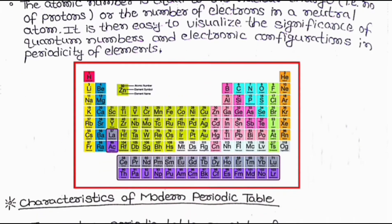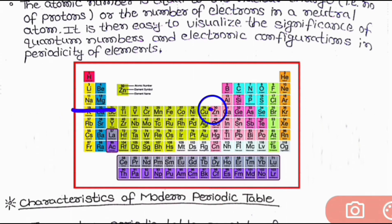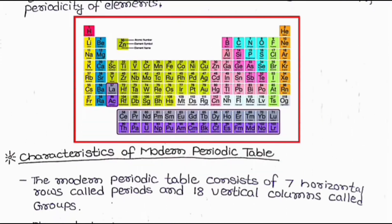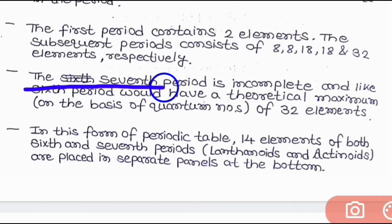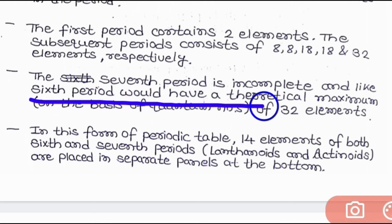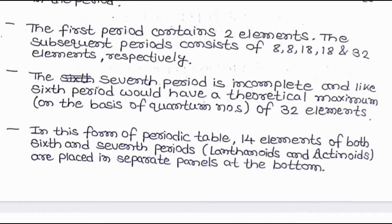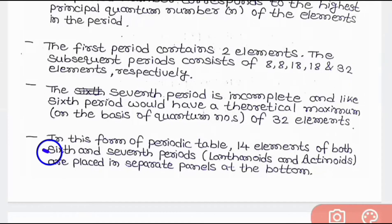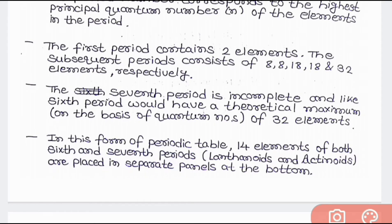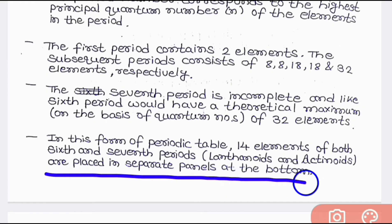In the first period, 2 elements are present; in the second period, 8 elements are present; in the third period, 8 elements are present, and so on. The fifth characteristic is that the seventh period is incomplete and the sixth period would have a theoretical maximum of 32 elements on the basis of quantum numbers. In this form of the periodic table, 14 elements of both the sixth and seventh periods — that is, lanthanoids and actinoids — are placed in separate panels at the bottom.